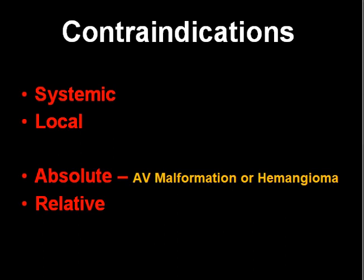Systemic contraindications, as the name suggests, are the medical conditions involving the patient's central nervous system, cardiovascular system, or endocrine system, etc. Local contraindications are the conditions present at or around the tooth that needs to be extracted.